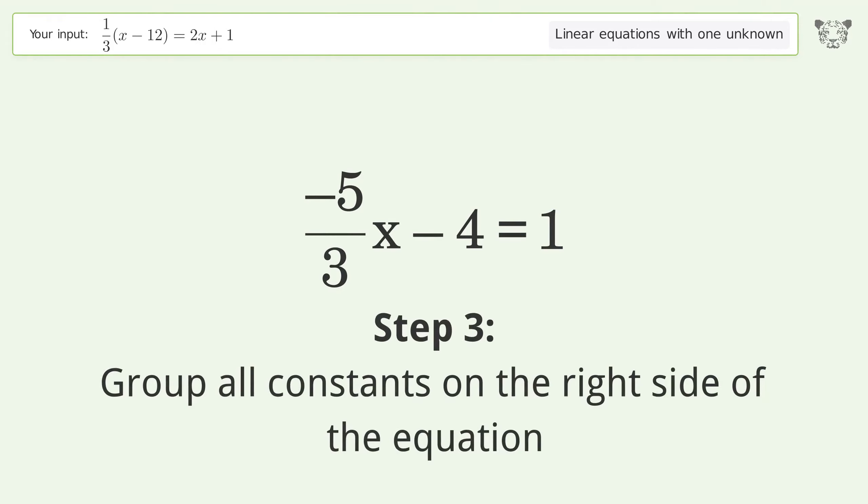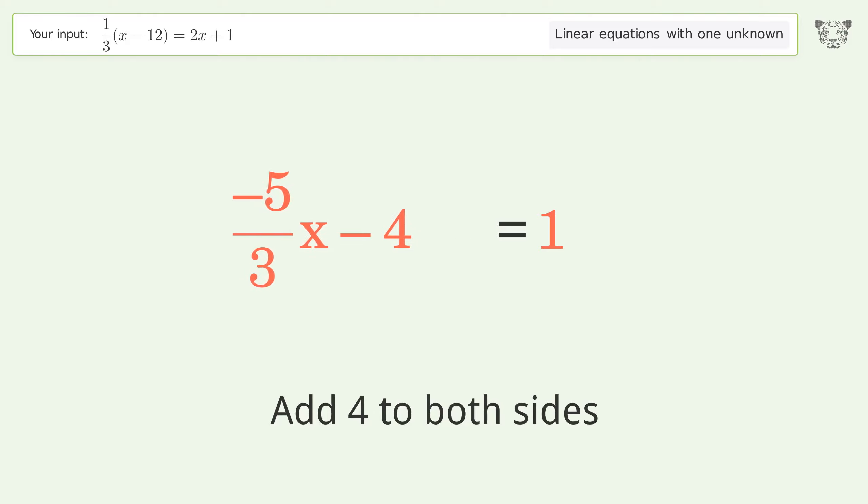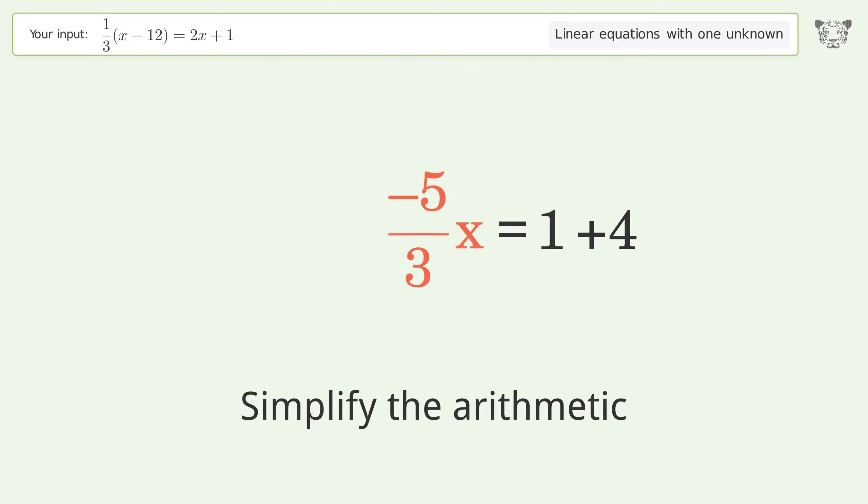Group all constants on the right side of the equation. Add 4 to both sides. Simplify the arithmetic.